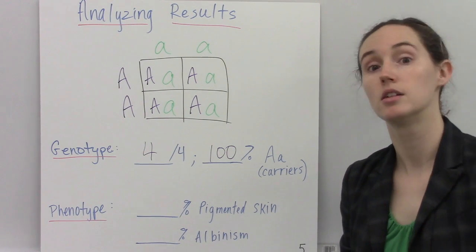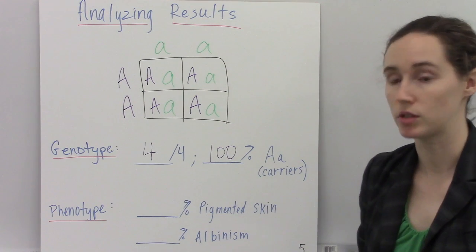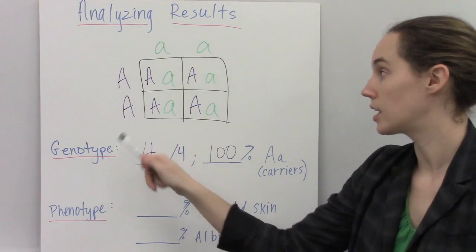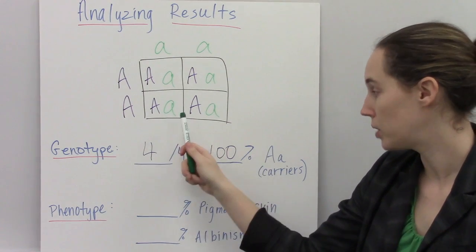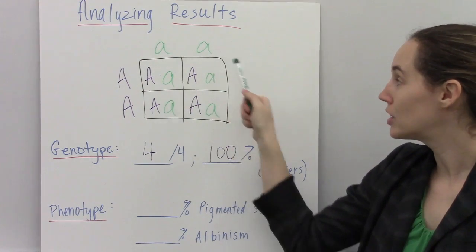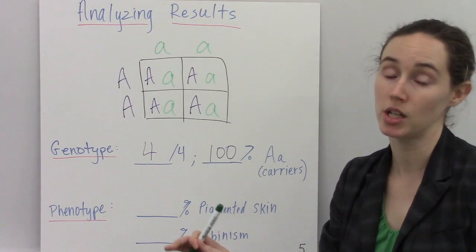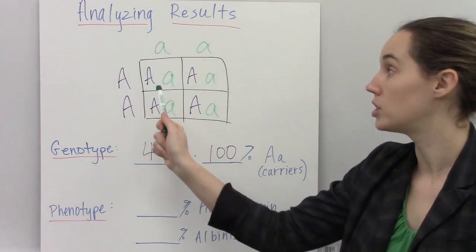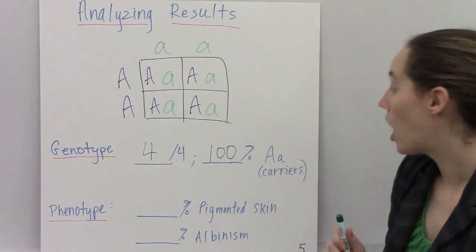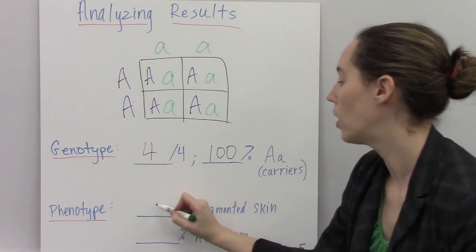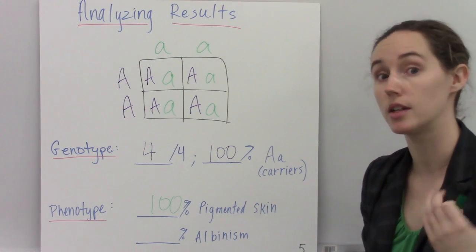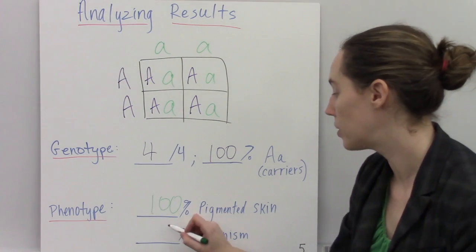So how does that translate into phenotype? Well, since pigmented skin is dominant over non-pigmented skin, even though each single one of these individuals carries the albinism gene, the pigmented skin gene dominates over it. So actually, 100% of our offspring will have pigmented skin, and 0% will have the phenotype of albinism.